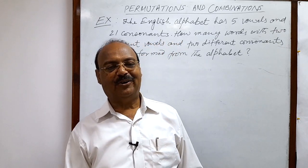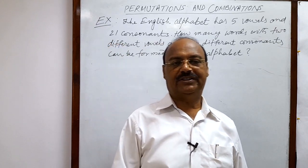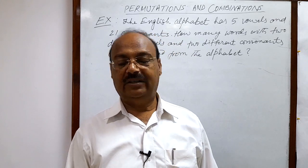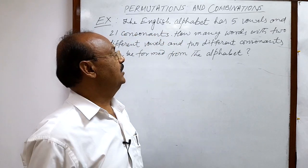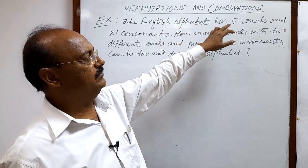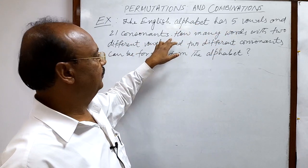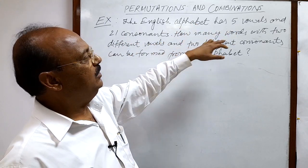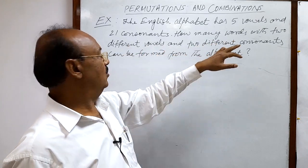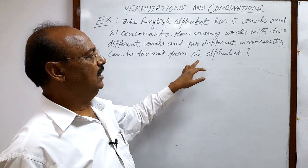Here we will see a question from the topic permutations and combinations. The question is very simple, interesting, and important. The English alphabet has 5 vowels and 21 consonants. How many words with 2 different vowels and 2 different consonants can be formed from the alphabet?